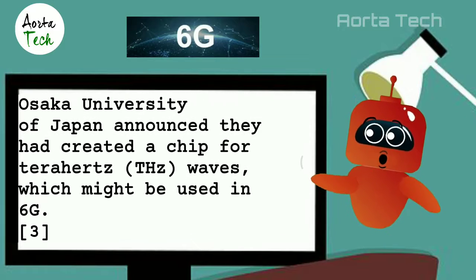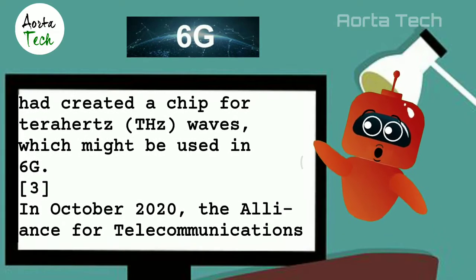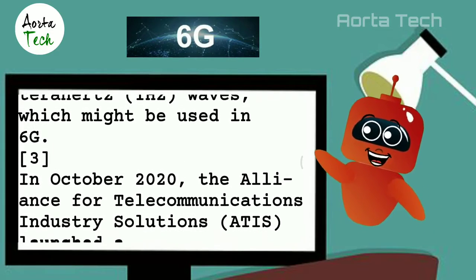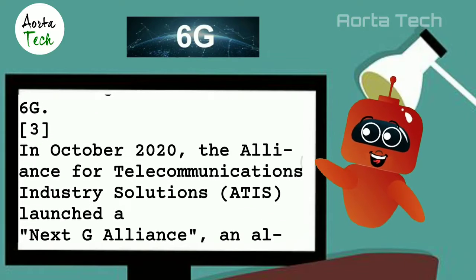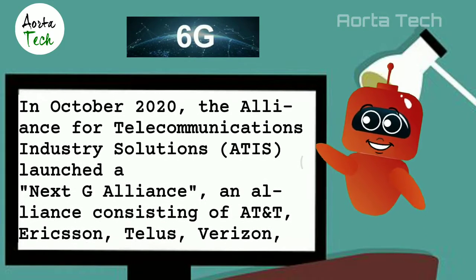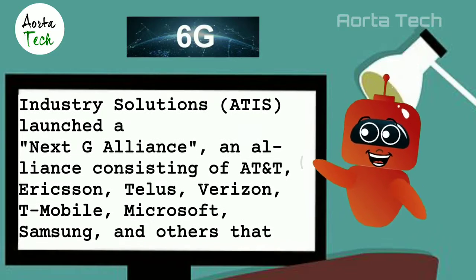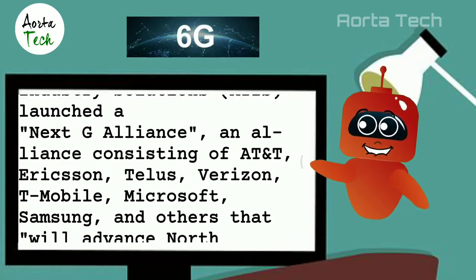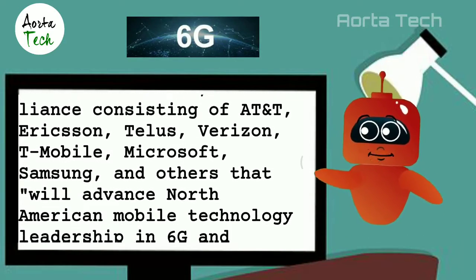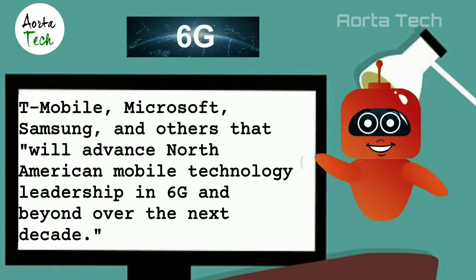In October 2020, the Alliance for Telecommunications Industry Solutions (ATIS) launched the Next G Alliance — consisting of AT&T, Ericsson, Telus, Verizon, T-Mobile, Microsoft, Samsung, and others — to advance North American mobile technology leadership in 6G and beyond over the next decade.